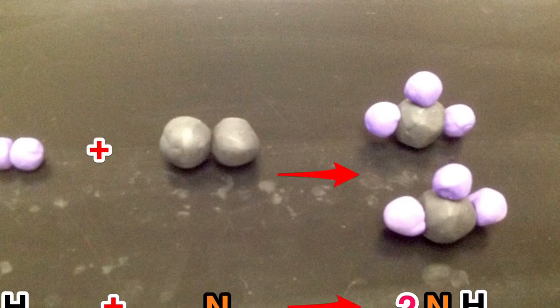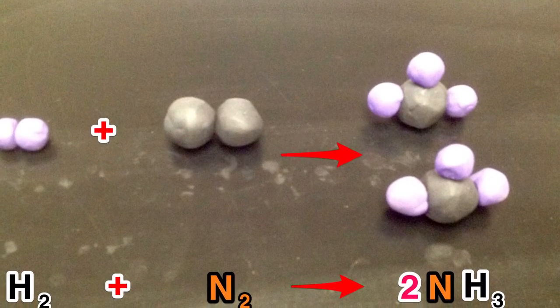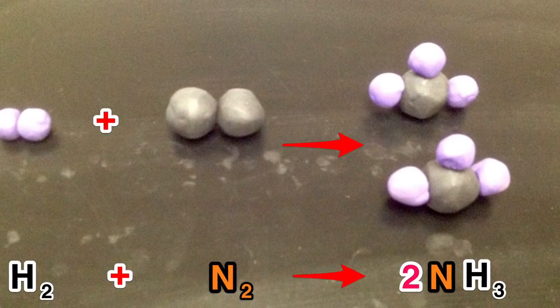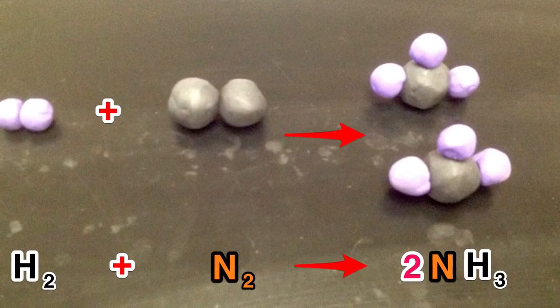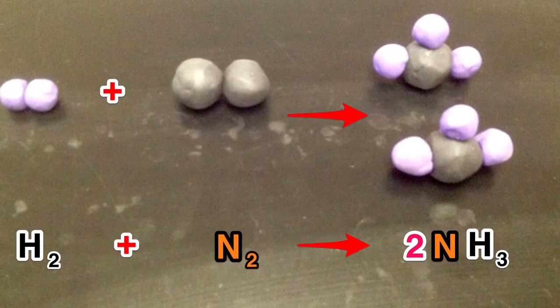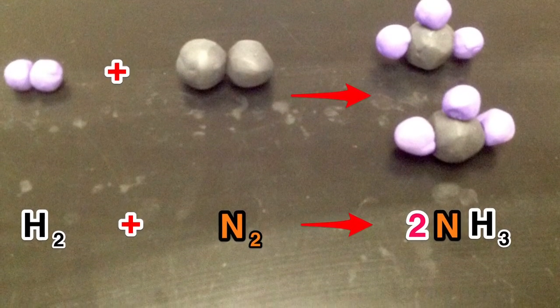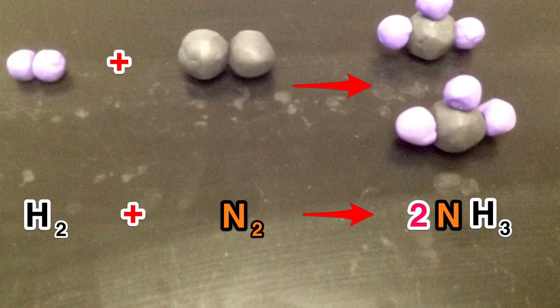By doing this, we have balanced the nitrogens. On the left-hand side, we have two atoms of nitrogen. On the right-hand side, we have two atoms of nitrogen. But now we have six atoms of hydrogen on the right, but only two atoms of hydrogen on the left. We now must continue to balance the hydrogens.